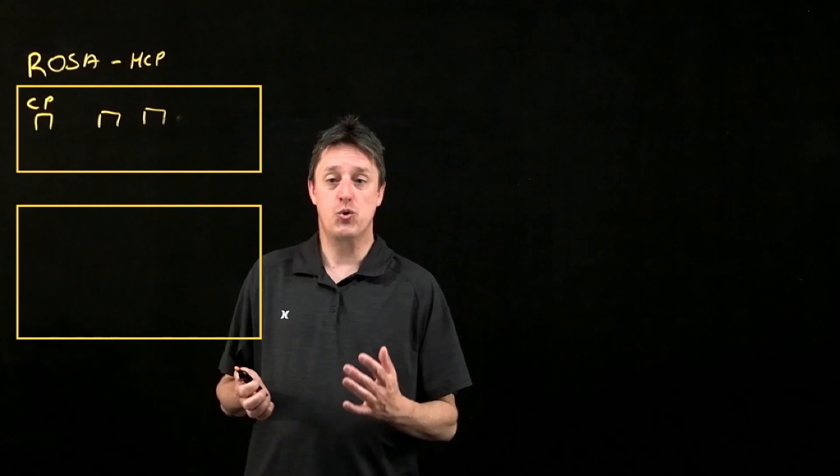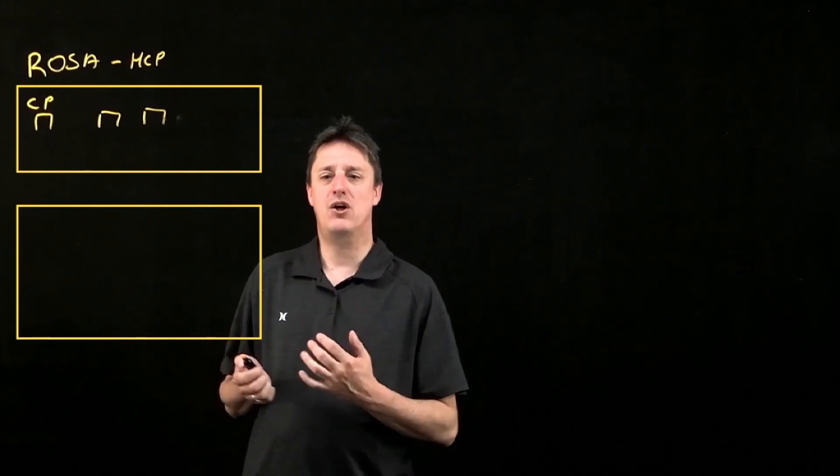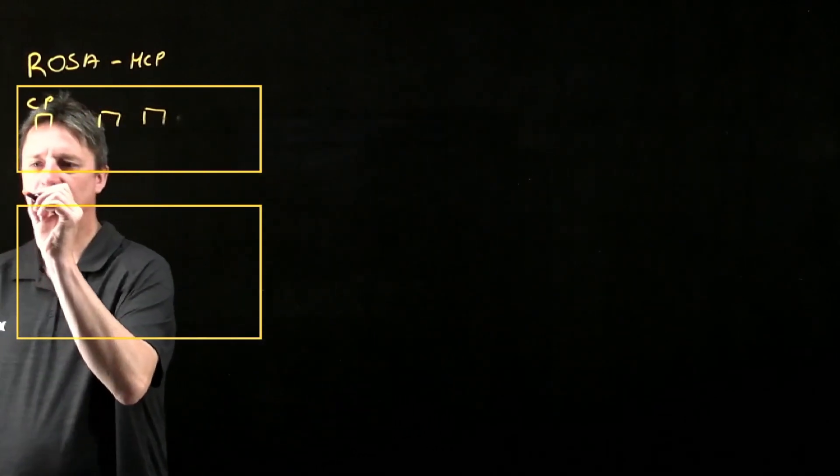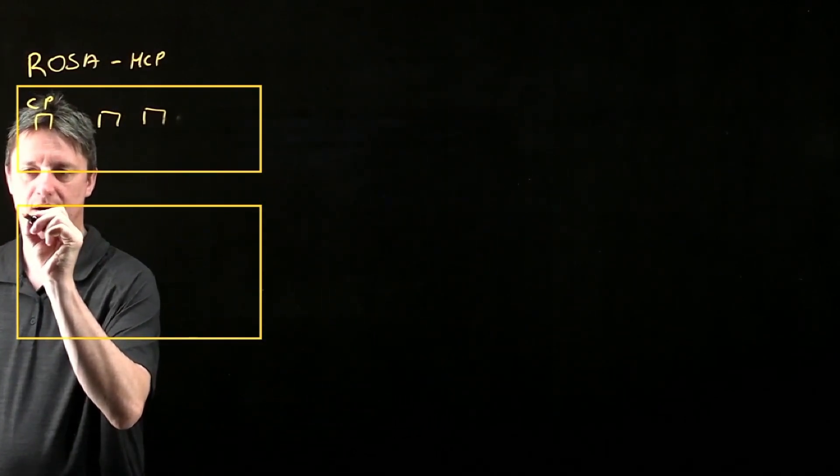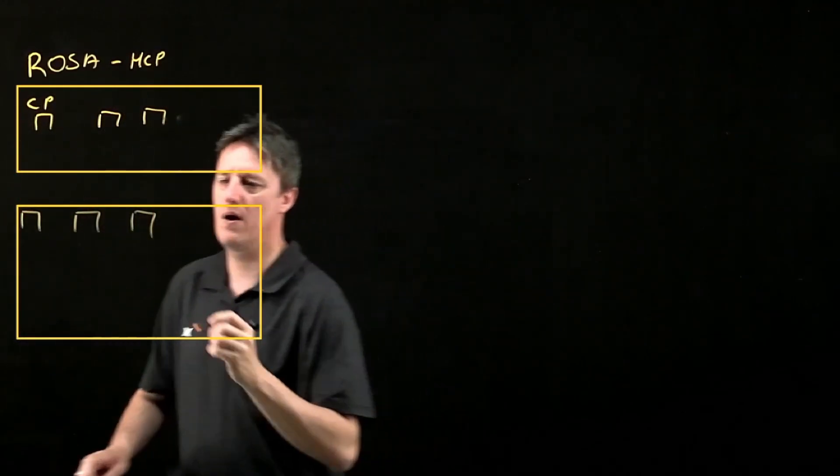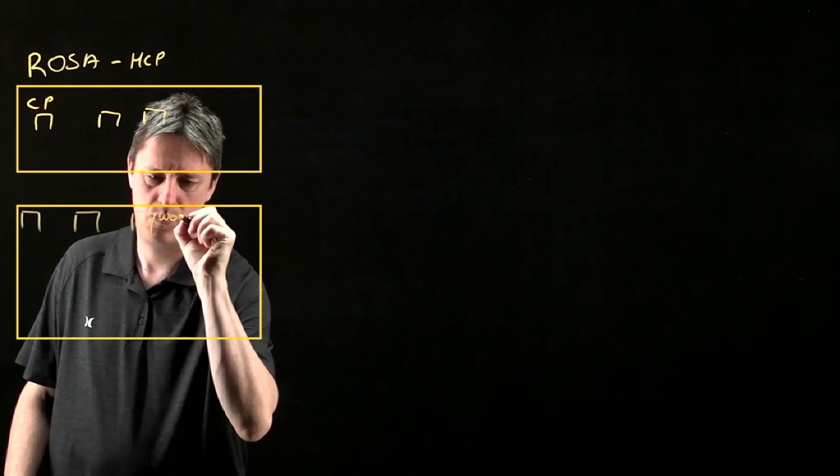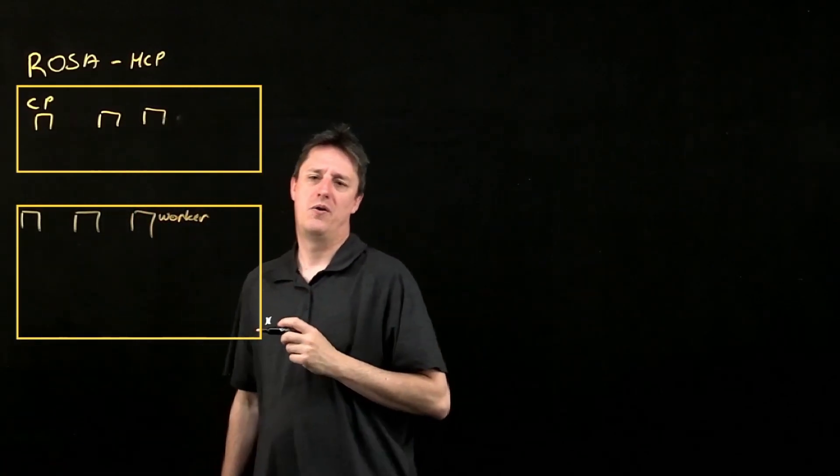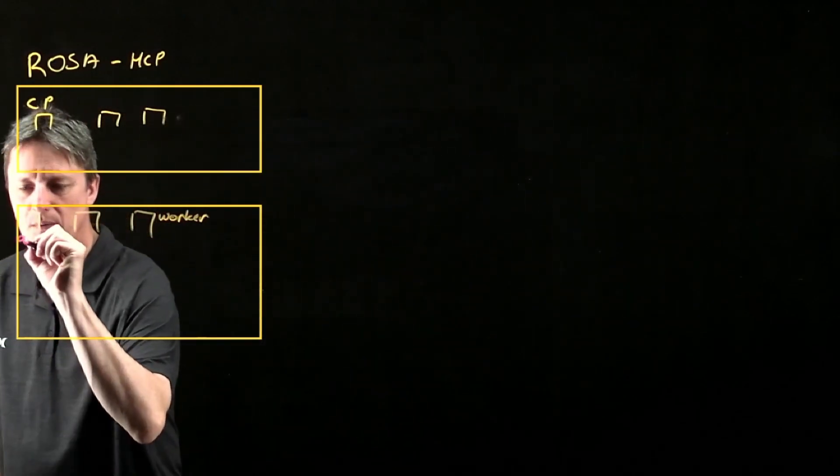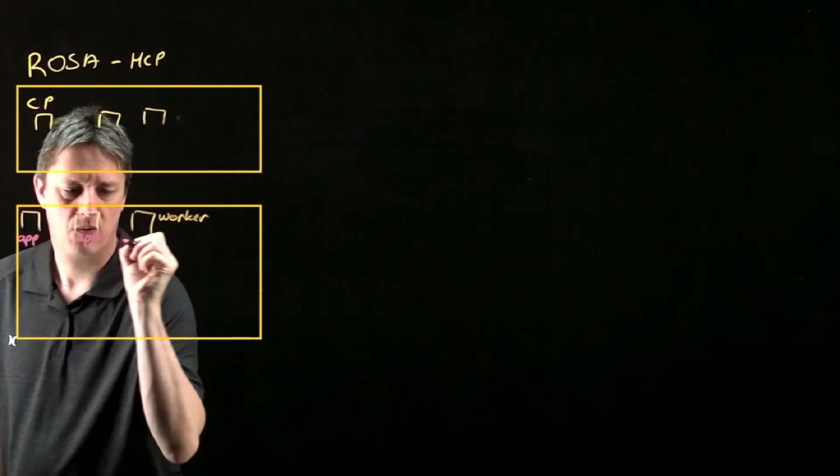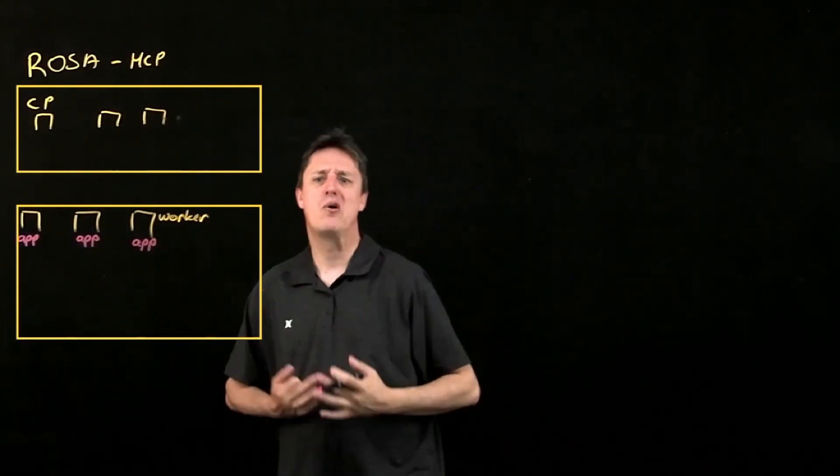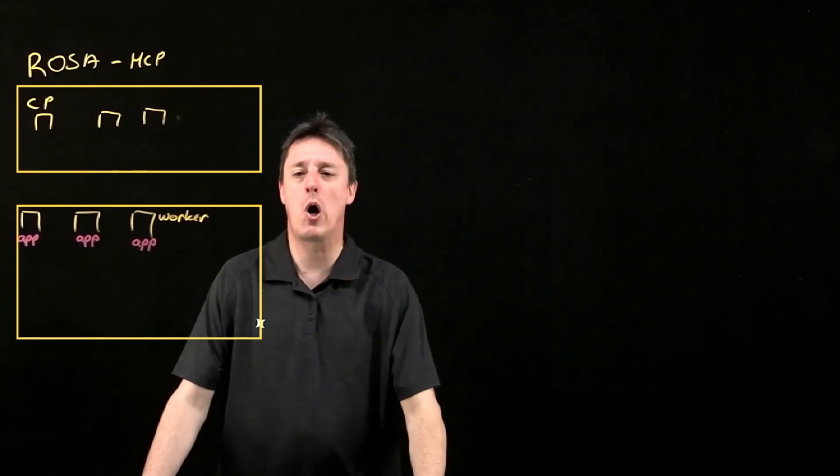The actual compute, the actual worker nodes, these are the nodes where the customer's applications will be running. These will exist inside a separate account inside the customer's account. These are my worker nodes and on those worker nodes, we're going to see all of the customer's applications. These are the container workloads for the modernized apps, typically microservices that the customer has brought into OpenShift.